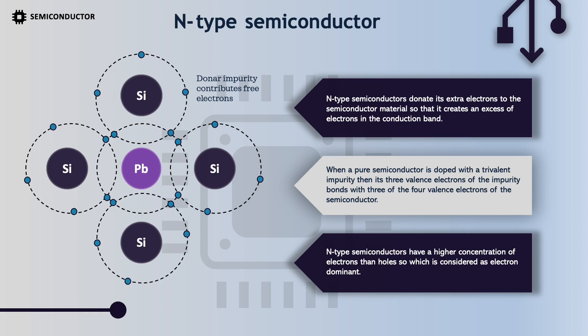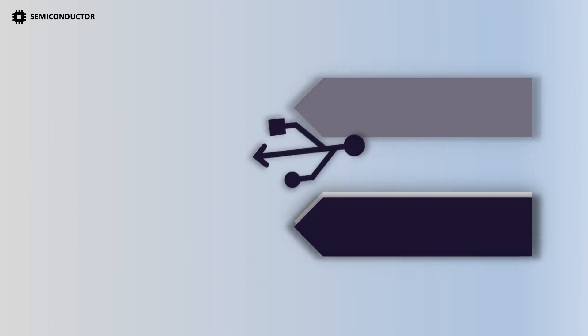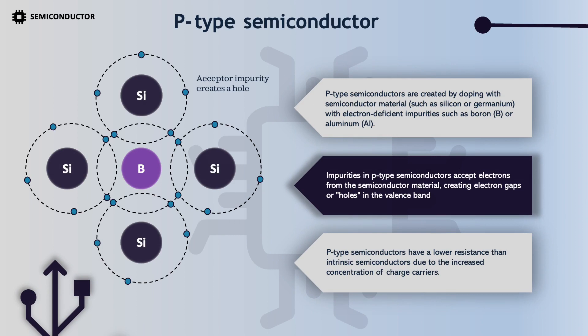N-type semiconductors have a higher concentration of electrons than holes, so they are considered electron-dominant. P-type semiconductors are created by doping semiconductor materials such as silicon or germanium with electron-deficient impurities such as boron or aluminum. Impurities in P-type semiconductors accept electrons from the semiconductor material, creating electron gaps or holes in the valence band. P-type semiconductors have a lower resistance than intrinsic semiconductors due to the increased concentration of charge carriers.